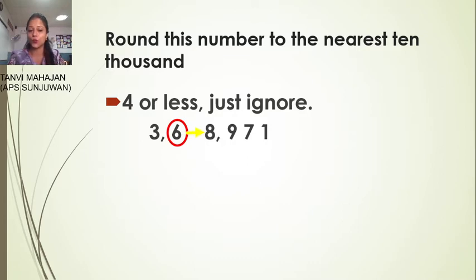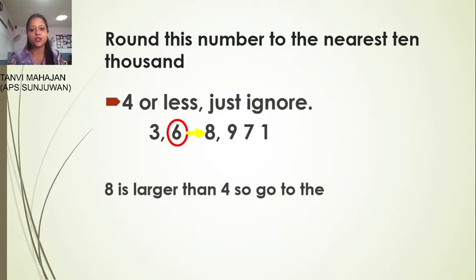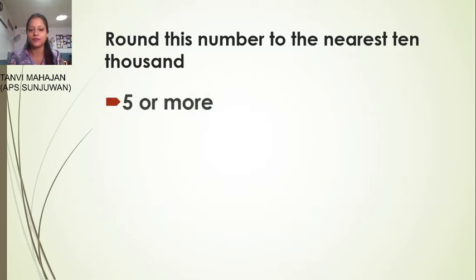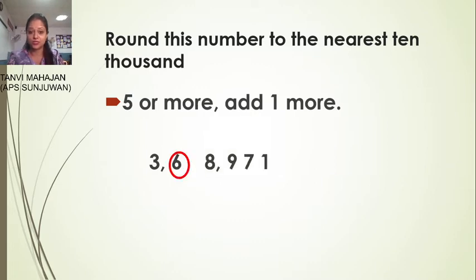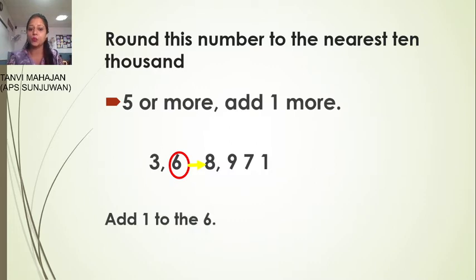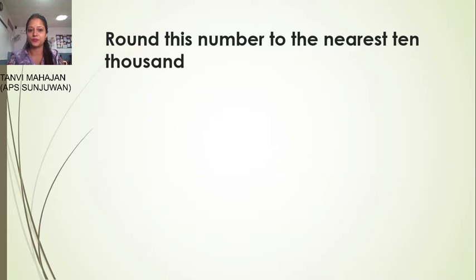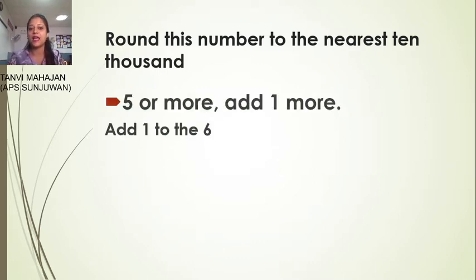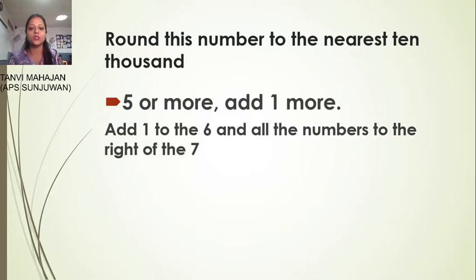Eight is larger than four, so go to the next line of the poem: five or more, add one more. Six has eight next door, so add one to the six. Add one to the six, and all the digits to the right become zero.